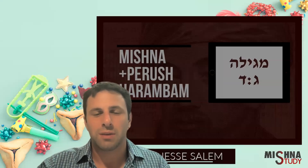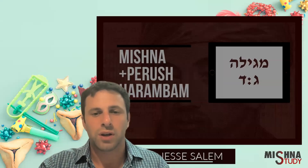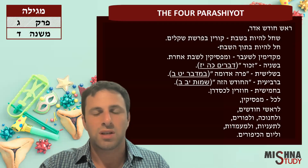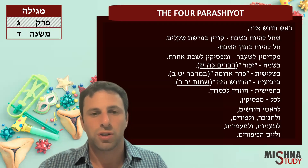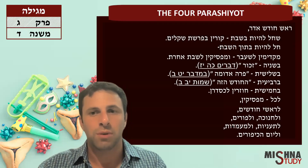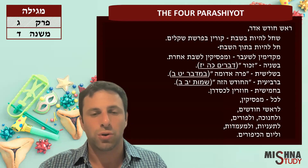Welcome to Mishnah. We're going to discuss the four Parashiyot. Famously, we have Parashat Shekalim, Parashat Zachor, Parashat Parah, and Parashat HaChodesh.